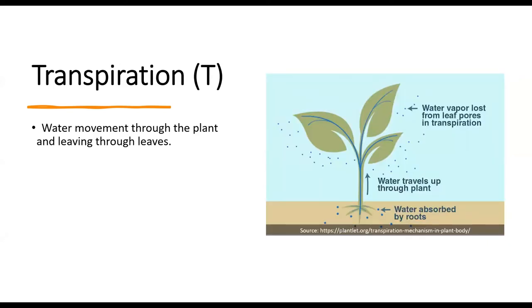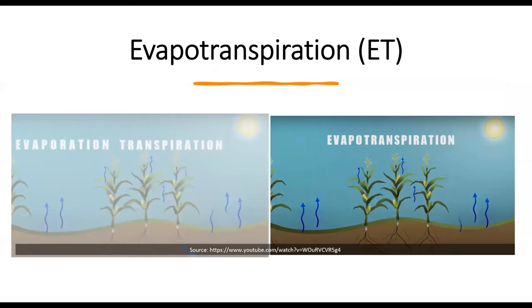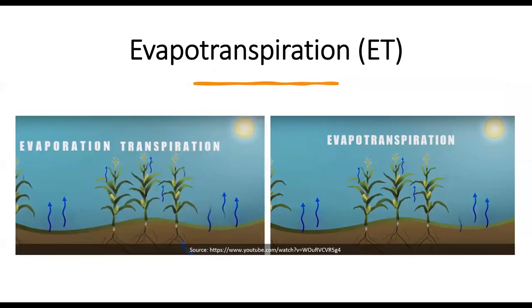Secondly, transpiration, or T, is the process of water movement through the plant and leaving through the leaves. Plants absorb water in a liquid state through the roots. Water then travels up through the plant and water vapor is lost from leaf pores in transpiration. Evaporation and transpiration are often mentioned together and are given one value — this is evapotranspiration, or ET.